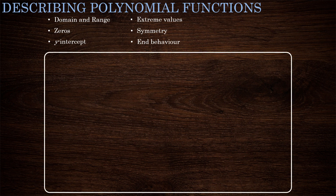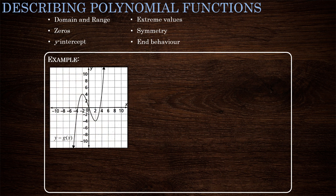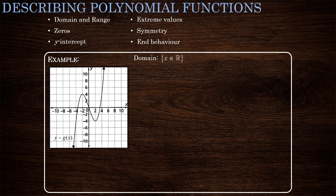Let's take a look using an actual polynomial function at how we can use some of these characteristics to describe it. Here's a graph of our function g(x). We'll begin with its domain. This function continues left and right forever with no breaks, gaps, or holes, so its domain is x is an element of the real numbers. This will always be the case with polynomial functions — they never have domain issues.